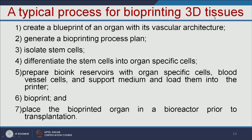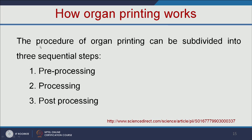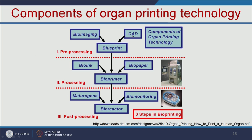The procedure of organ printing can be subdivided into three sequential steps: preprocessing, processing, and post-processing. In preprocessing, the first step is bioimaging of the particular organ. Then, based on CAD — computer-aided design — you make the blueprint of the particular organ.